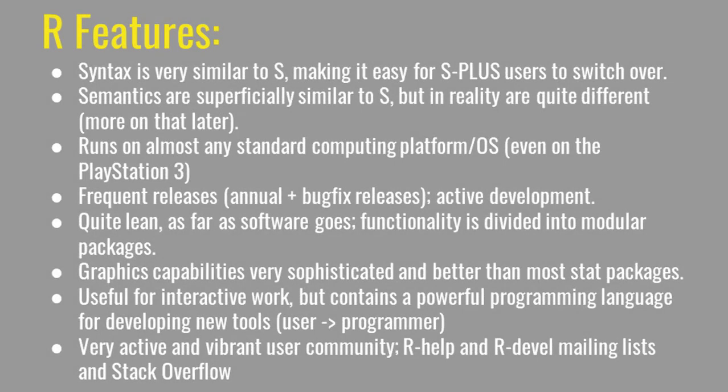Some of the features of R: the syntax is very similar to S, which made it easy for S-plus users to switch over, though this is less relevant today as most people go to R directly. The semantics are superficially similar to S but in reality are quite different — we will talk more about this in a future lecture. One of the main benefits of R is that it runs on any standard computing platform or operating system — Mac, Windows, Linux, even a PlayStation 3 — and there are frequent releases with annual major releases and bug fix releases in between.